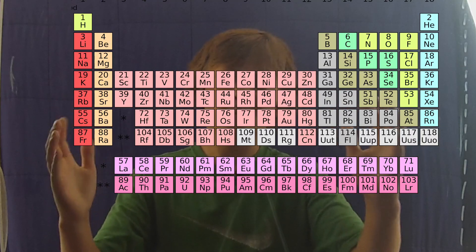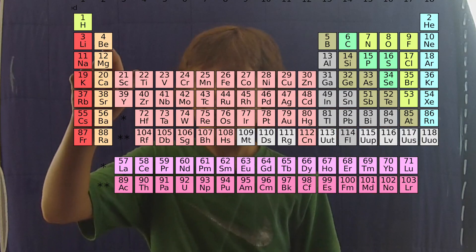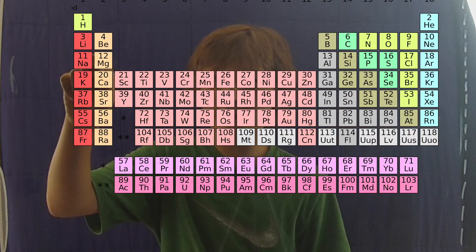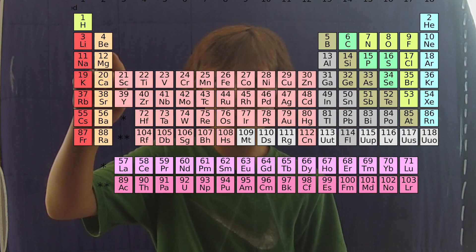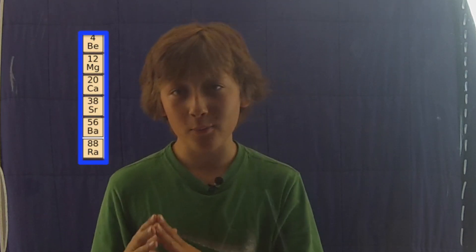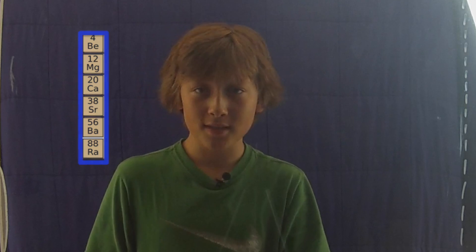This is the periodic table of elements, and as you can see here, this is magnesium. Magnesium is an alkali earth metal along with five other elements, which means they will all have similar physical and chemical properties.